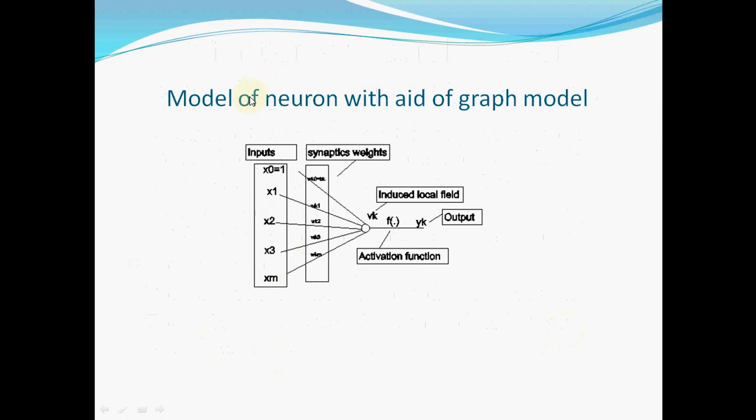This is a model of a neural network with the signal flow graph model. Here we can see the inputs, the synaptic weighting, the induced local field — this linear combination of the synaptic weights — the activation function, and the output.